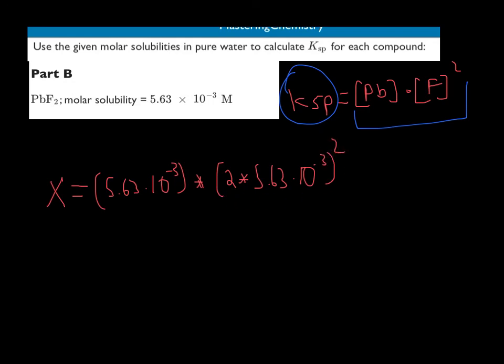So, why don't we just do the math out. And you should get a value that X equals 7.13 times 10 to the minus 7 which equals the KSP value.